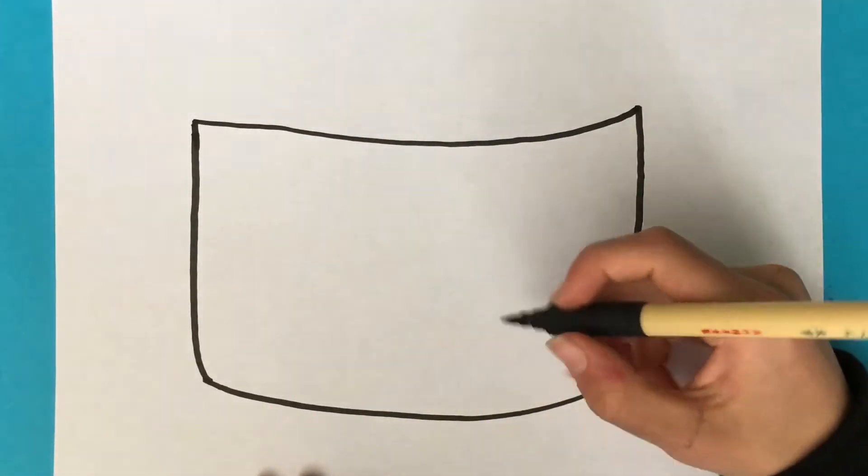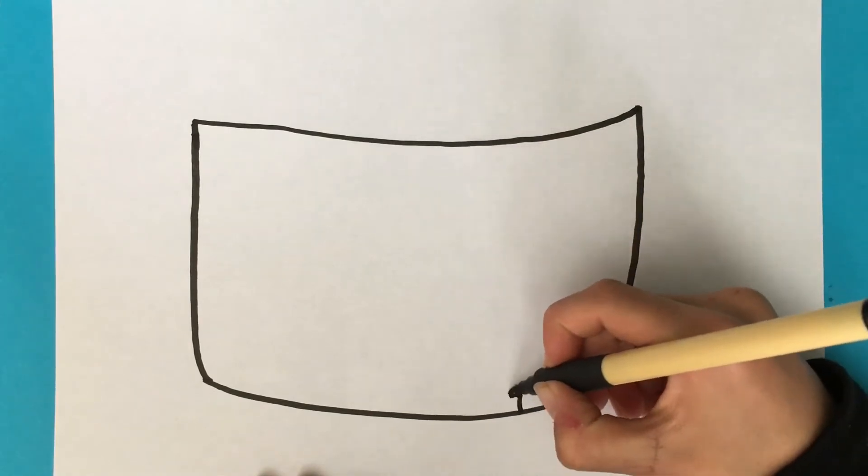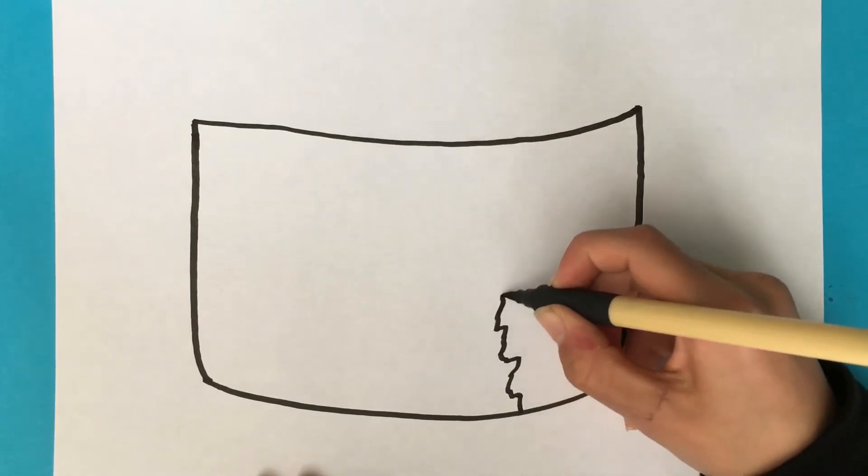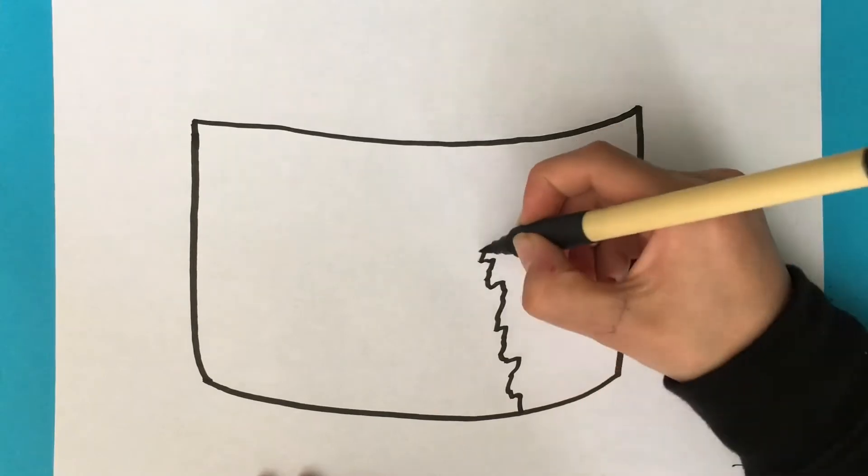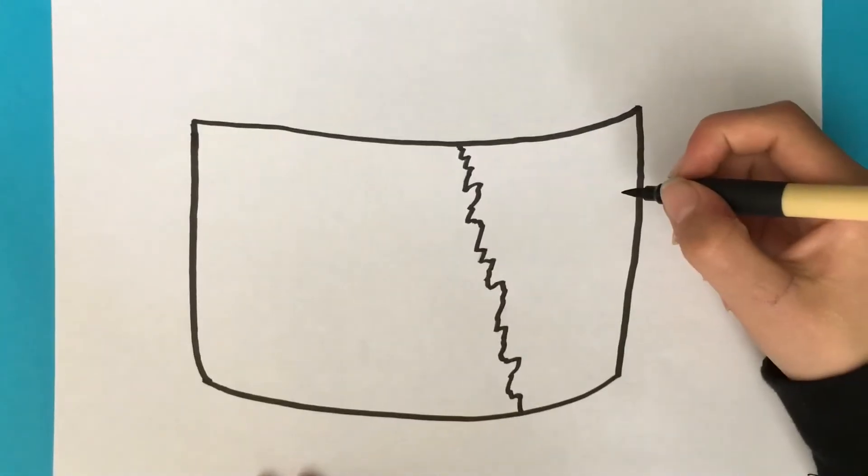Just gonna join it up there because it didn't quite match and then we're going to do the broken part. It starts about here and we're just going to do a load of jagged lines going across and end up about there.